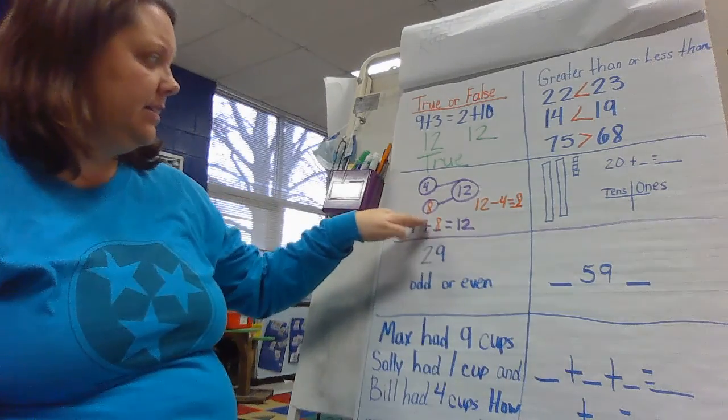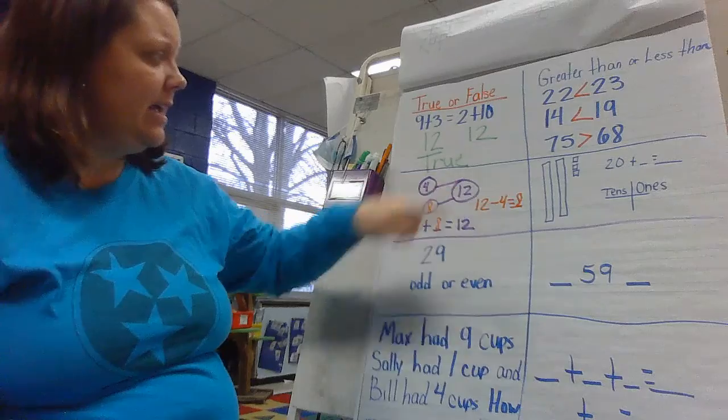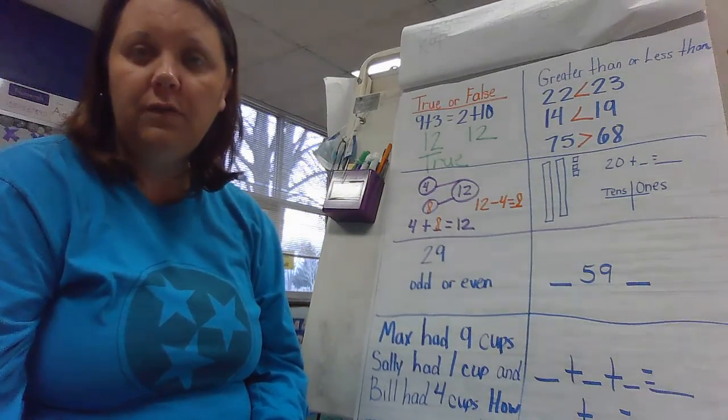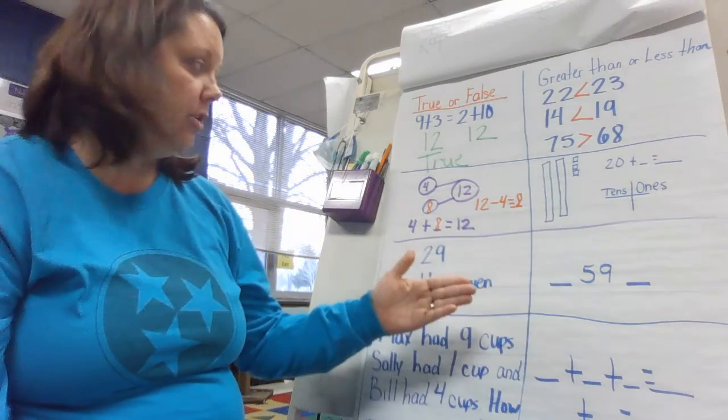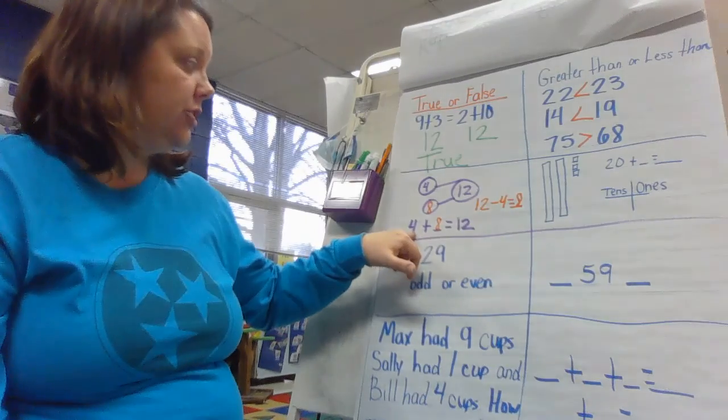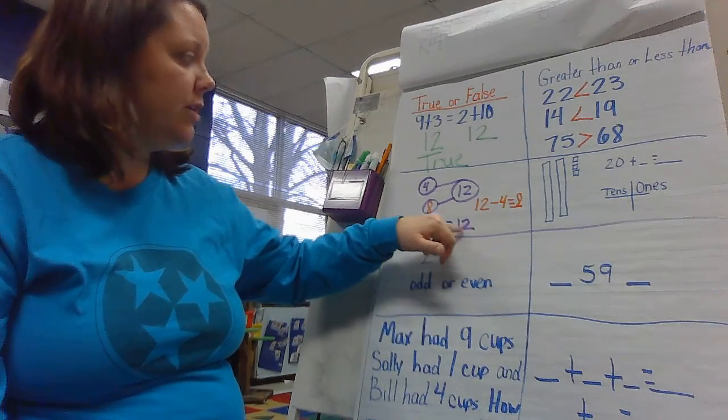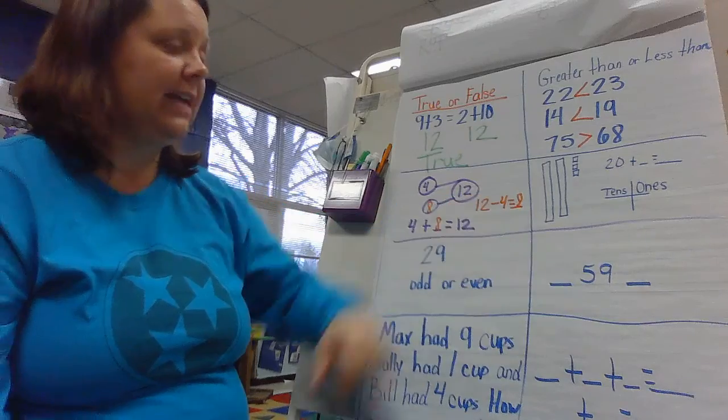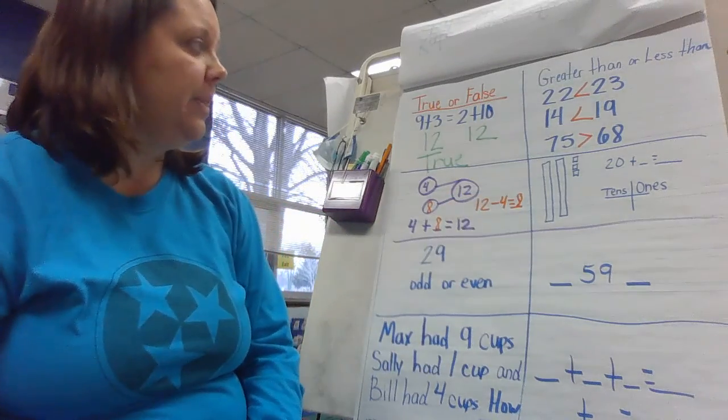So if you don't have that, we have 4 and 8 are partners of 12. 4 and 8 are our parts. 12 is our whole. And then you can write two equations. An addition, 4 plus 8 is 12. Or a subtraction, 12 minus 4 is 8. So I hope you were able to write that down.